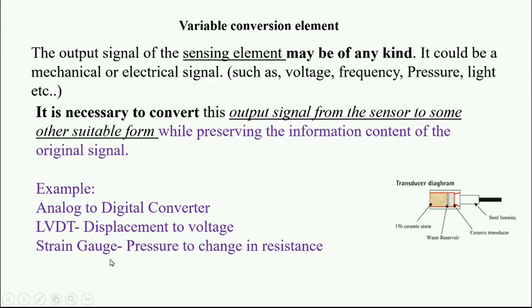Strain gauge - the pressure, the strain applied to a surface, is converted into a change in resistance. Resistance is a part of a circuit diagram, so the voltage can be changed. This is called variable conversion element. It is preserving the information content in the original form but in another form - this can be in digital form. So displacement into voltage or pressure strain into resistance change, finally current change or voltage change.